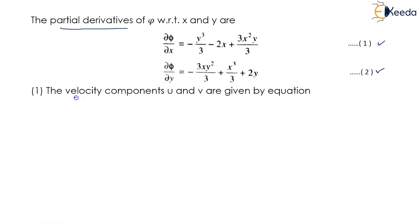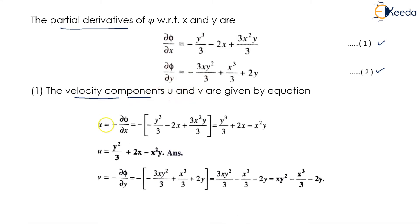We are asked to calculate the velocity components u and v. For u = -∂φ/∂x, substituting equation 1, the two negatives become positive. So u = y³/3 + 2x - x²y.